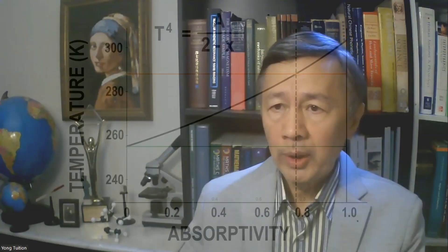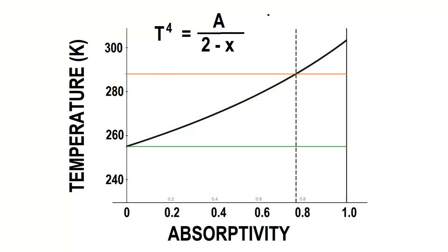This is his formula, where Ts is the surface temperature and X is the proportion of the atmospheric absorption of the terrestrial infrared radiation, also called absorptivity. Notice that the surface temperature increases as the carbon dioxide in the atmosphere increases.